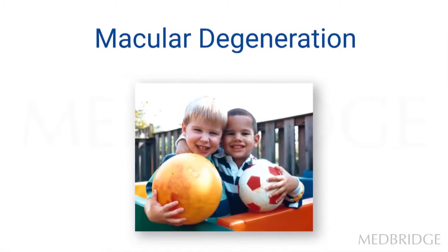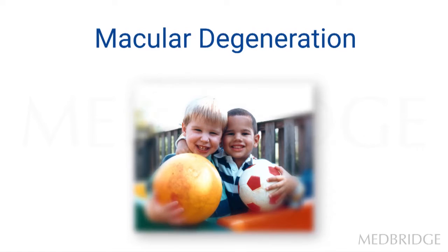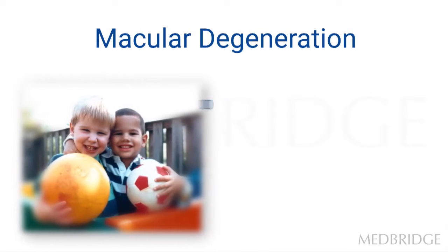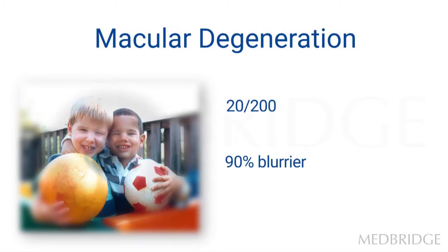Here is a picture that I will use to simulate central vision loss from macular degeneration. But first, this digital image shows everything in focus, which is not the way we see. Only our central vision sees sharply, or 20-20, while our other vision is approximately 20-200 in the periphery, or about 90% blurrier than what we see straight ahead.